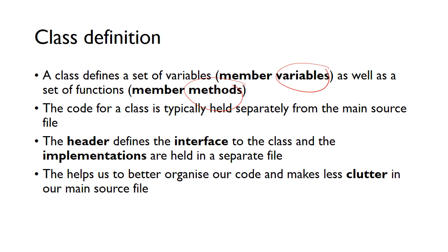This class is typically held separately from the main source file. Up to this point we've just been seeing main.cpp, but when we create our classes they'll be in separate files — they won't be in main.cpp. We normally have two files: a header file, which defines the interface to the class, and a separate file that contains the implementation. Splitting the code up like this moves all the class code into separate files and makes our main file much less cluttered and easier to debug and maintain.